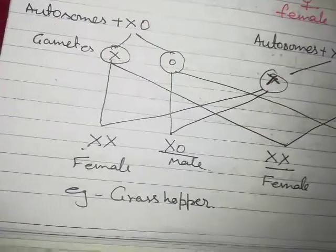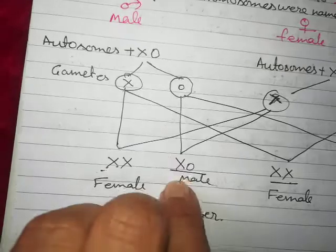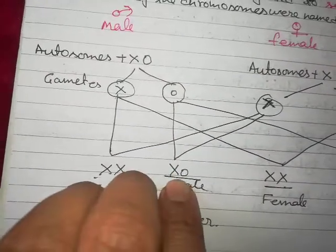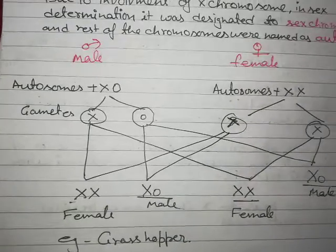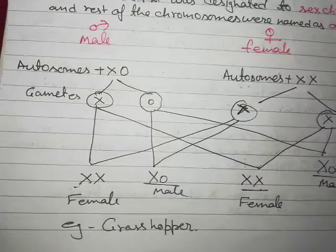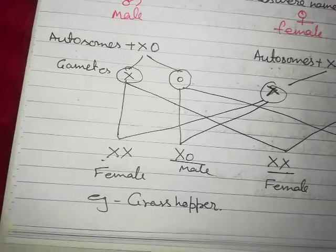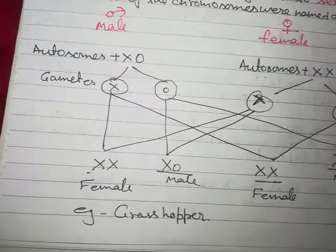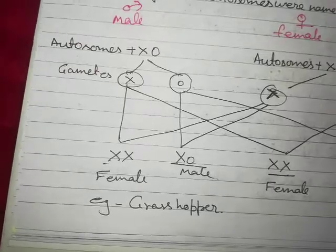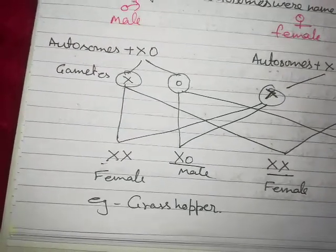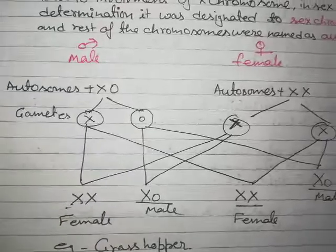If the sperm having an X chromosome fuses with the ovum having an X chromosome, it will form XX and will be female. If male sperm without any sex chromosome fuses with the ovum having an X chromosome, it will form XO and become male. This is the mechanism behind sex determination in a few insects — specifically the grasshopper, which has the XO type sex determination mechanism, in which 50% of the male sperm contain an X chromosome while 50% do not, and each female ovum contains an X chromosome in addition to autosomes.